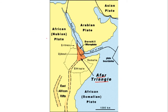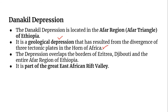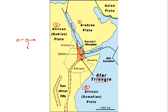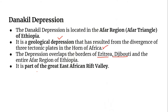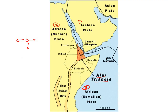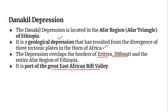The depression overlaps the borders of Eritrea, Djibouti, and the entire Afar region of Ethiopia. It is a part of the Great East African Rift Valley. These facts about Danakil Depression are very important.